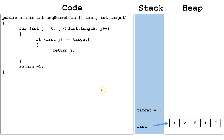In our example, we're going to assume that the list variable contains an array of ints described here. We're also going to assume the value 3 was passed to the target parameter, and that's represented on our stack here. Let's trace through this search. As we notice, the number 3 is not present in this array, so it will return negative 1.